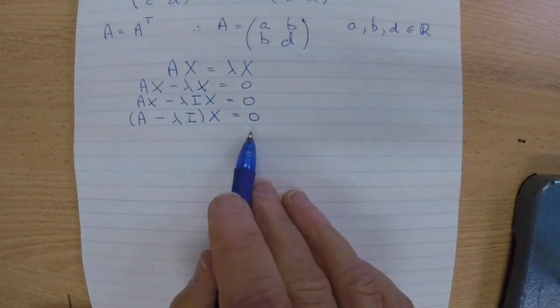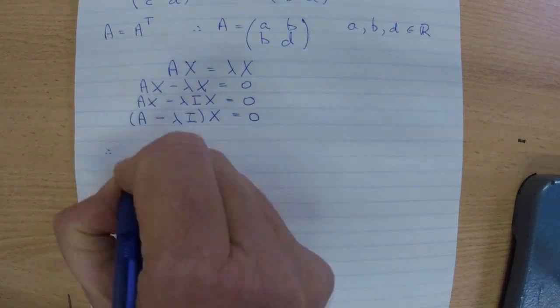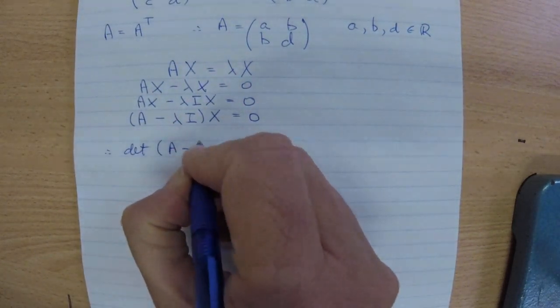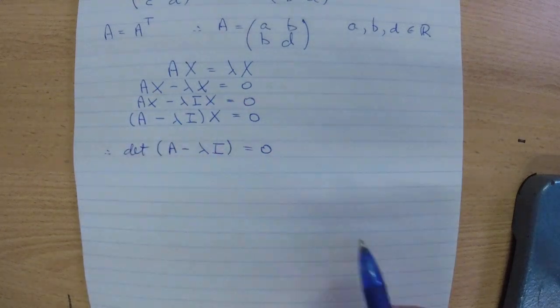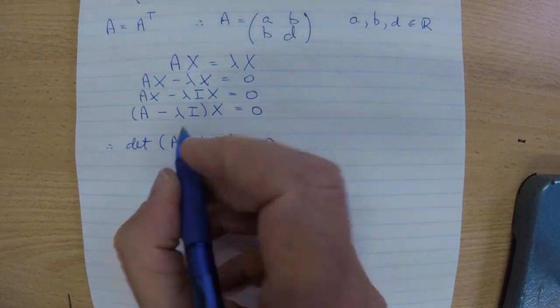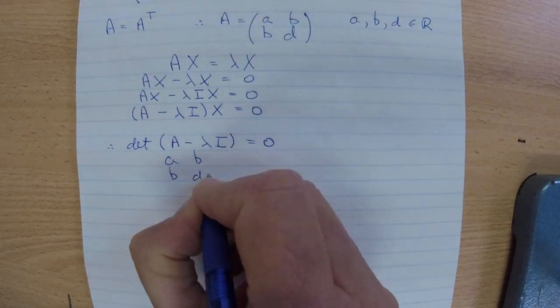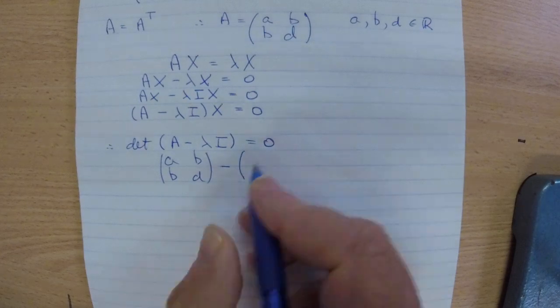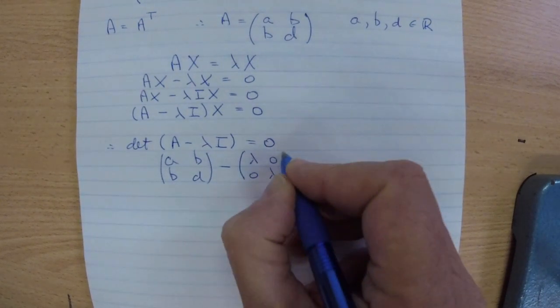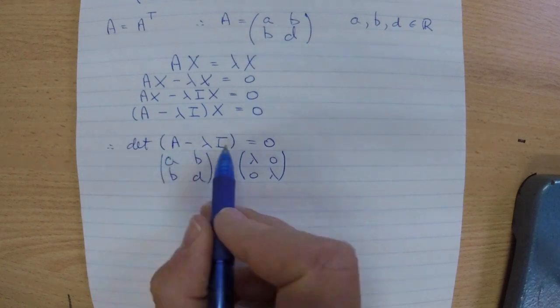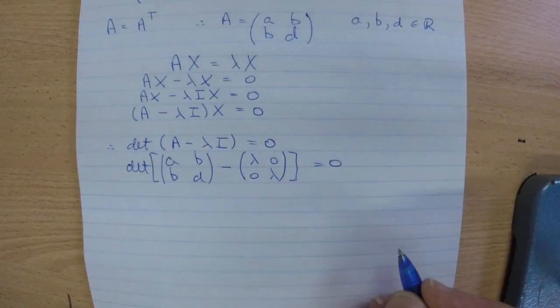Now we can factor out x, so A minus lambda I times vector x equals 0. And as we've learned in class, for this statement to avoid a trivial solution where the eigenvector equals the zero vector, we want this matrix to be singular. So we can conclude that the determinant of A minus lambda I must be 0, which makes this a singular matrix.